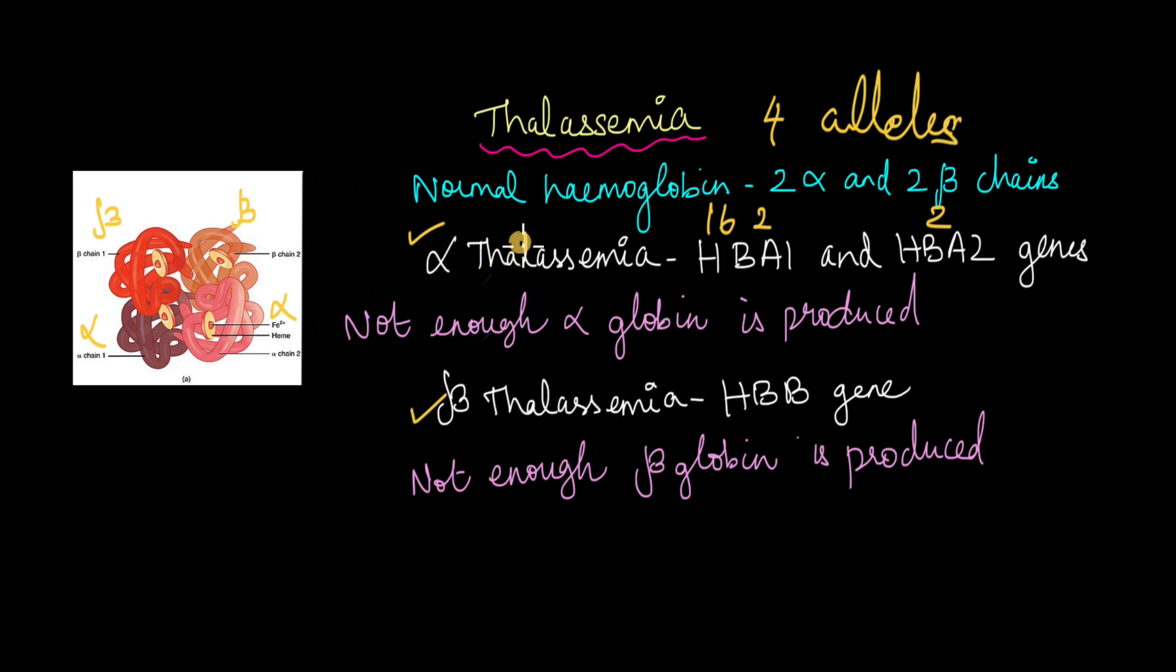So a total of four alleles are affected in the case of alpha thalassemia. Now because of this mutation in these two genes, not enough alpha globin is produced. So alpha chains are not produced in sufficient quantities. So the beta chains that are produced, they begin to polymerize with one another, forming a very inefficient hemoglobin.